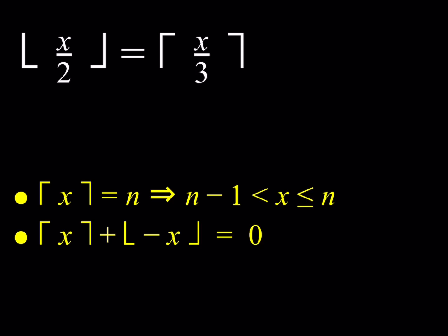You'll remember the floor function from other videos. I've included a couple of bullet points here for your reference for the ceiling function. The ceiling function is basically defined as the rounding up operation. With the floor value, we always round down — for example, the floor of 3.14 becomes 3. With the ceiling, you round up instead, so that becomes 4.